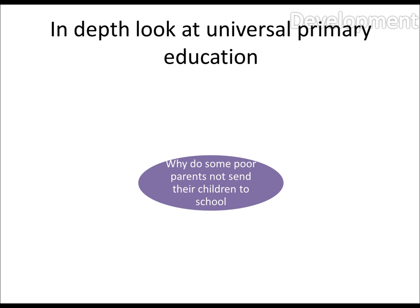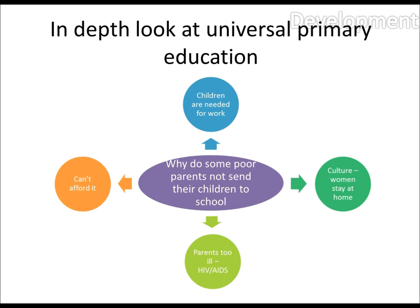Why on earth would somebody not send their child somewhere they can get education? Well, it's not as stupid as it might sound. There are four main reasons. Children are needed for work. Culture — in some countries the women stay at home and the men go. Parents might be too ill; they might have HIV, AIDS, or malaria and need their children to look after them. And not every country has free universal primary education, so some people just can't afford school.